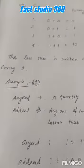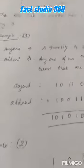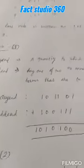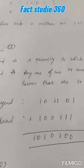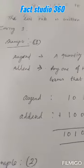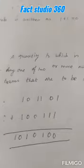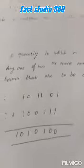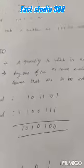Example 1. You should know about the two terms augend and addend. The augend is the quantity to which something is added, so the first number is the augend. The second number is the addend. Here we have shown the two numbers: the augend is 101101 and the addend is 100111.